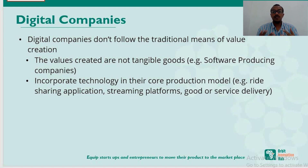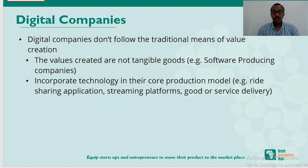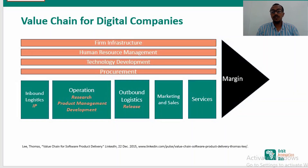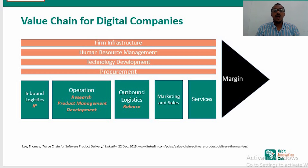For sharing applications, streaming platforms, or service delivery platforms, the approach differs. As you can compare from the first slide, firm infrastructure, human resource management, technology development, and procurement are more or less the same — the secondary activities don't necessarily change. However, the primary activities like inbound logistics, operations, and outbound logistics are slightly different for digital companies.